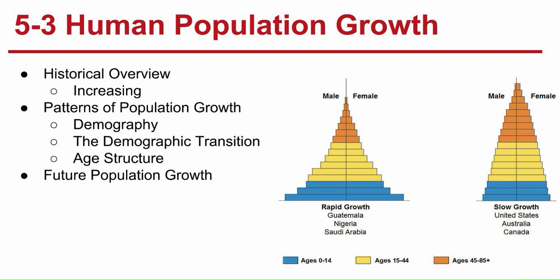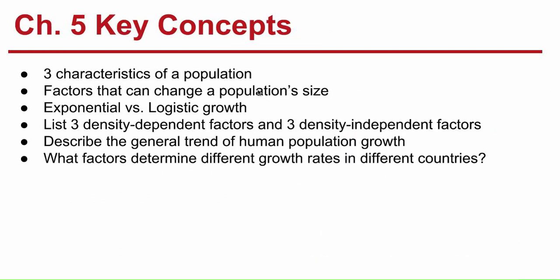Now the Chapter 5 key concepts: be able to list the three characteristics of a population and the factors that can change population size. Know the difference between exponential and logistic growth, and list three density-dependent and three density-independent factors. Make sure you can describe the general trend of human population growth and what factors determine different growth rates in different countries. That's it for Chapter 5 — see you at Chapter 6.